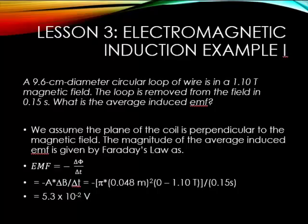And the change in the magnetic flux is going to be final minus initial. So the final was 0 as it was removed from the field, and the initial was 1.1 teslas. Notice a negative sign there. Then it's going to be divided by 0.15 seconds. So if you calculate all that out, meters squared times tesla divided by second is a volt. We'll see our final answer is 5.3 times 10 to the minus 2 volts.